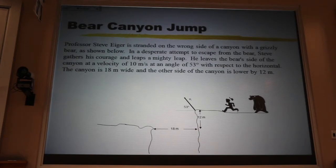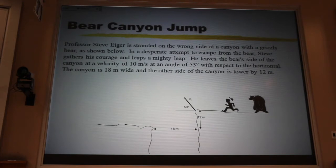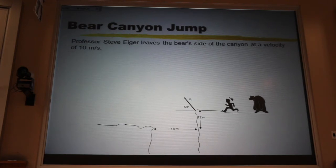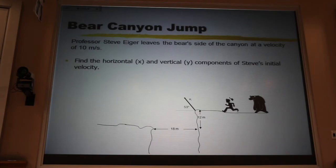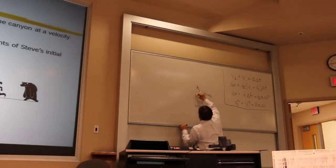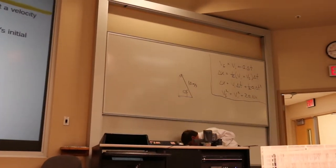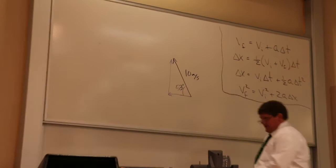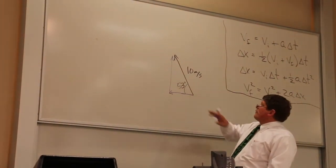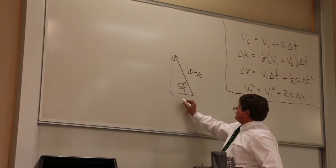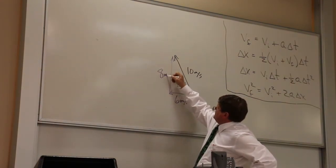Steve leaps with a mighty leap. He leaves the bare side of the canyon at a velocity of 10 meters per second with an angle of 53 degrees. We're first asked to break up that velocity vector into its x part and its y part. The x part would be to the left, and the y part would be up. If I recognize this as a 3-4-5 triangle, this is 5 times 2, so this is going to be 3 times 2, and this will be 4 times 2.